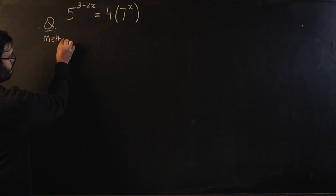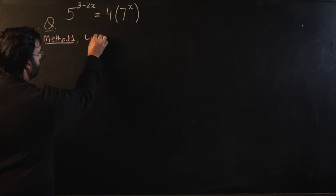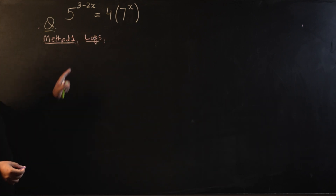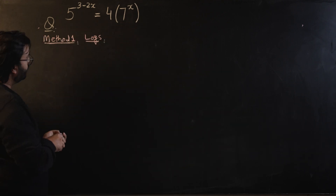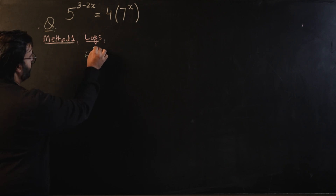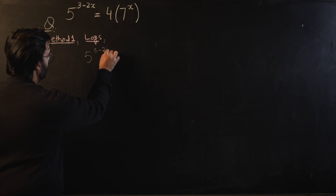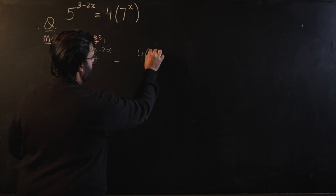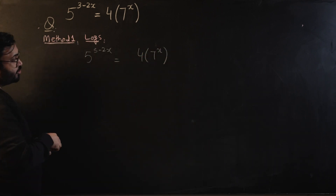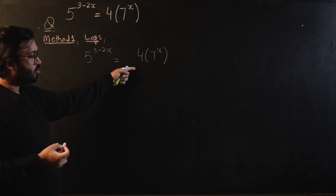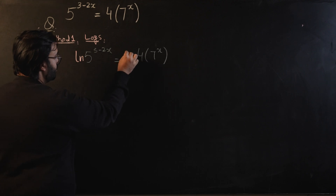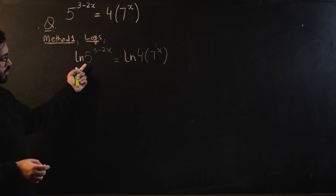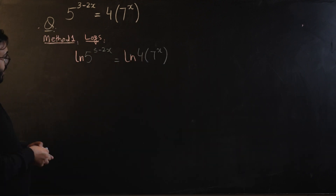The first approach is using logarithms right away. I'm going to introduce a logarithm on both sides of the equation. My equation is five raised to the power three minus two x, equal to four times seven raised to the power x. You can introduce a common logarithm or a natural logarithm — I'm introducing a natural logarithm on both sides. We can then use the power rule to bring the power to the front.